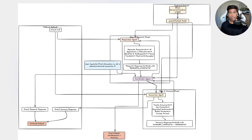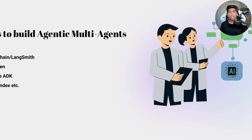This kind of multi-agent system can be built using many different libraries available today — some of them are LangChain, LangSmith, AutoGen from Microsoft, Google ADK (Agent Development Kit), and also LlamaIndex. There are many different tools available and you can use them to build this agentic multi-agent system.